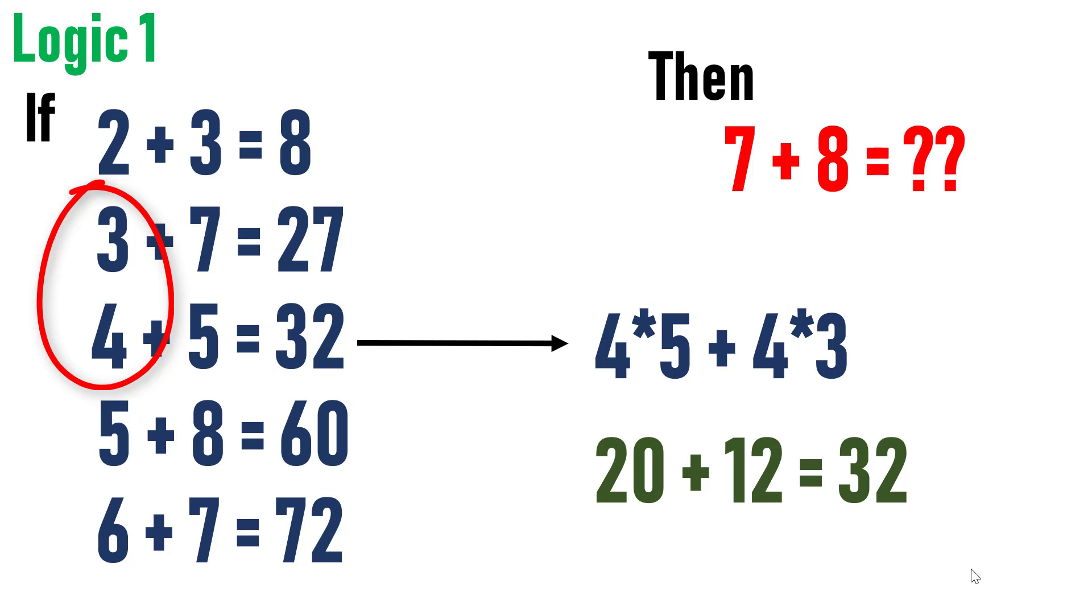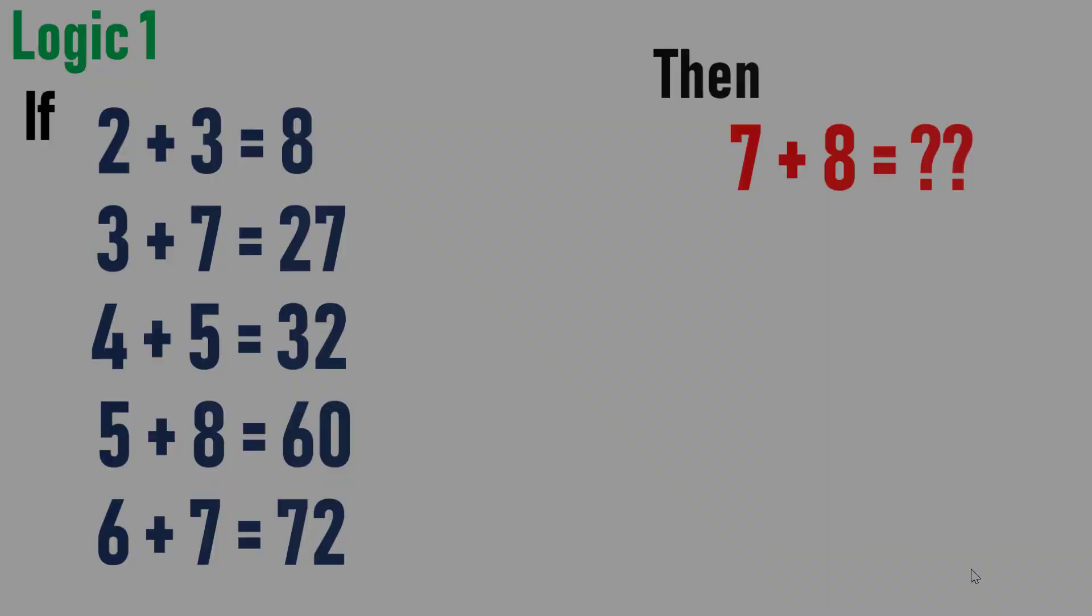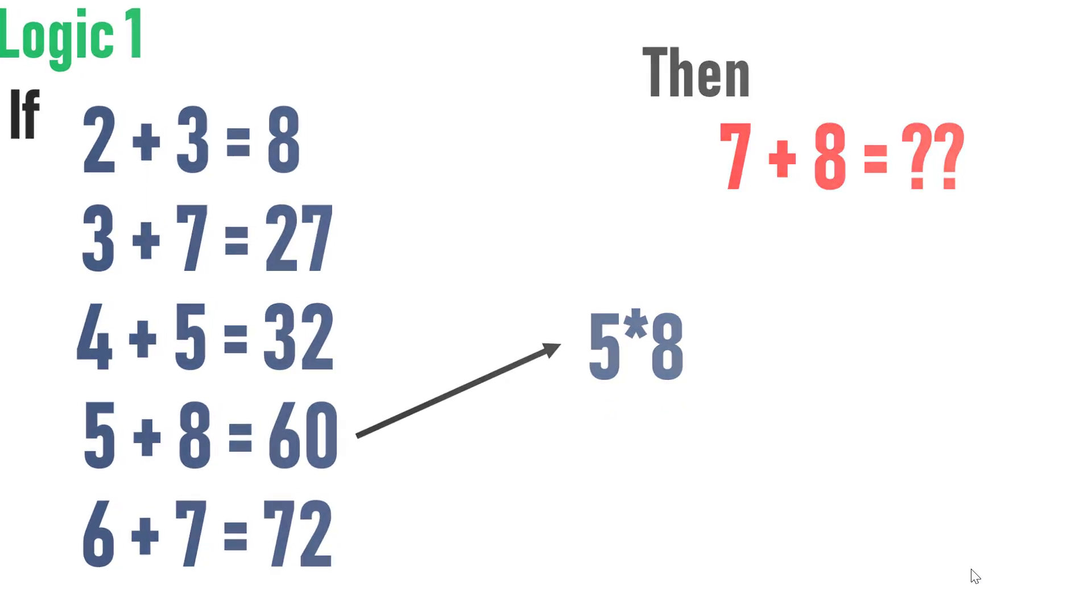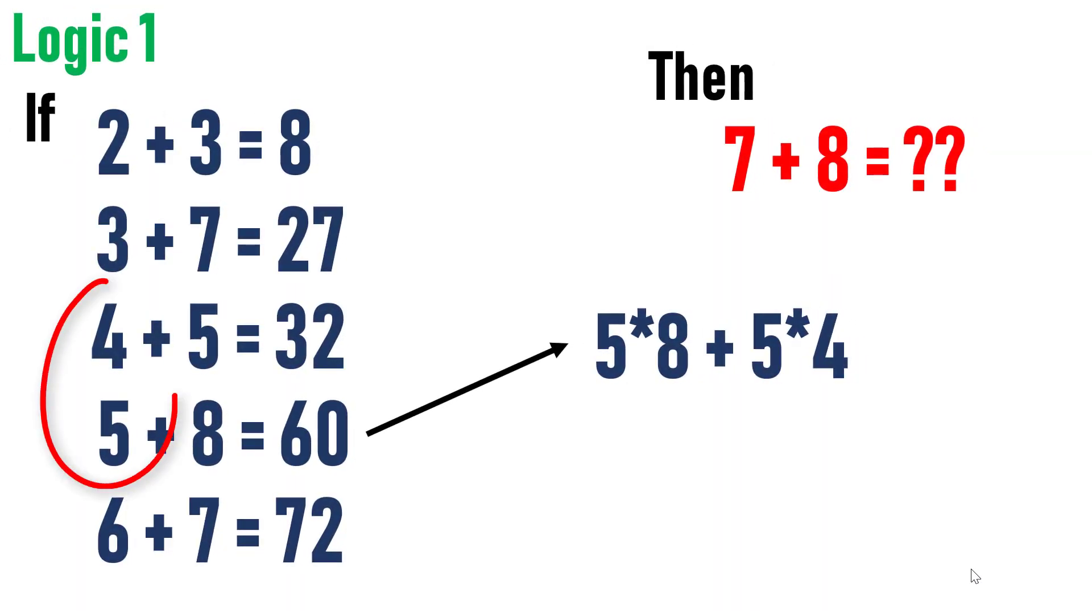Let's check for the another equation. In the next equation, 5 into 8 is 40 plus 5 into 4, which is 20. Adding both will yield 60.